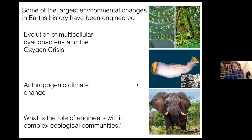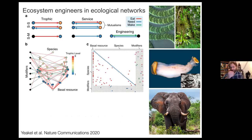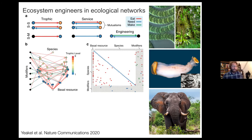What is the role of engineers within complex ecological communities? There's been a lot of theory developed to examine ecosystem engineers in systems, but most of it is within a smaller scale — understanding maybe one or two species. We wanted to understand how engineers might impact a community of species. That required us to think about how to integrate abiotic interactions into the biotic interactions characterized by food webs, and to think about interactions more generally — taking into account trophic interactions as well as mutualistic interactions.